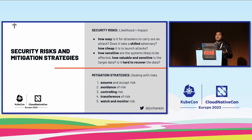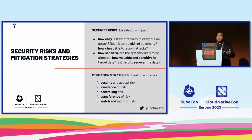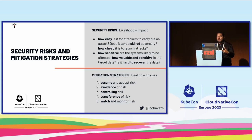Mitigation is about being honest about what is going to happen. You can accept the risk and do a trade-off. You can avoid the risk — it's not in your control to fix it. You can control the risk and manage its effects. You can transfer the risk — for example, putting a CDN in front transfers the risk to an upper layer. Or you can watch and monitor the risk: accept that it happens and monitor in case it gets out of hand.